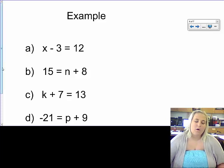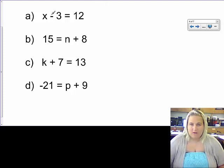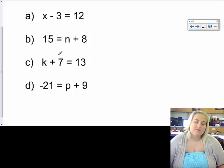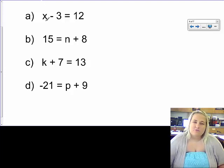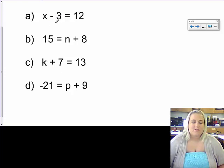We're going to do some extra practice with this. What I'm trying to do is I'm trying to get the variable by itself. And to get the variable by itself, that means I have to move everything away from the variable. So if I have x, like in this case I do, and 3 is being subtracted from it, well, the opposite of subtracting 3 would be to add 3. So what I'm going to do is I'm going to add 3.